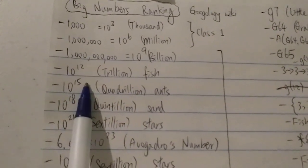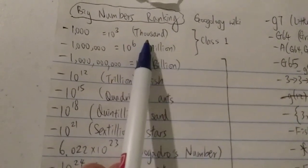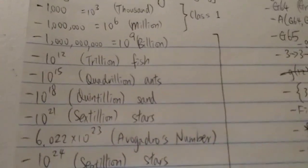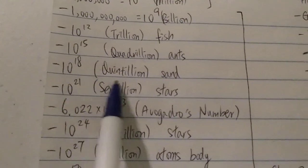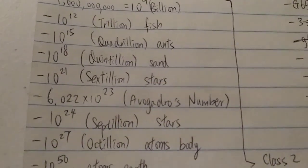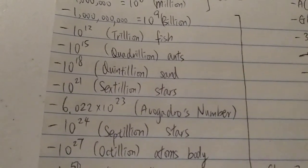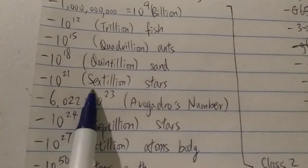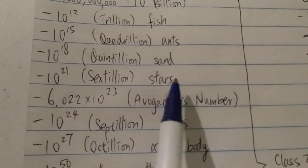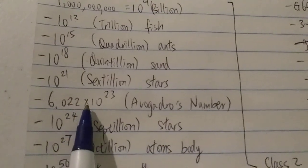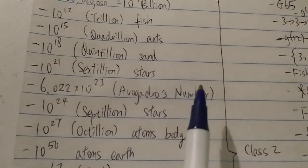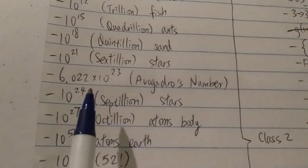Each number jumps by 3 additional zeros in the short scale. So 10 to the 15 is quadrillion, which is around the number of ants on Earth. Next, 10 to the 18 is quintillion, around the total number of sand grains on all the beaches on Earth. Next, 10 to the 21 is called sextillion, which is the lower bound of the number of stars in the observable universe. Then we have 6.022 times 10 to the 23, Avogadro's number — the number of atoms in one mole of a substance.